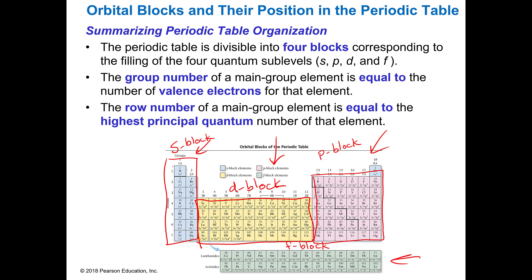The group number is up here like the 1A, 2A, whatever. And what's really nice about this is if you look at that A number, that tells you how many valence electrons there are. So if you're in group 1A, that means you have one valence electron. If you're in group 7A, you have seven valence electrons.